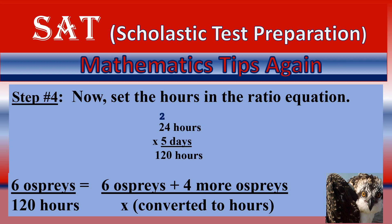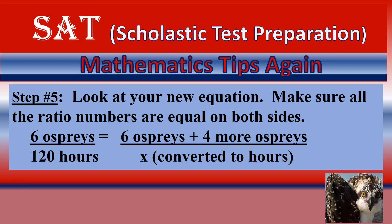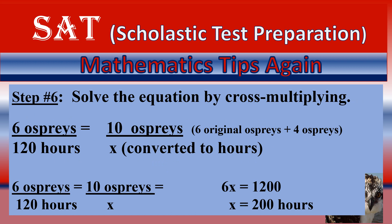Now set the conversion ratio: six ospreys over 120 hours equals six ospreys plus four more ospreys over x. You can use x, y, z, b — whichever variable you want. Six ospreys plus four more ospreys gives you 10. Make sure all these ratios are part of the equation: six ospreys equals 10 ospreys — make sure you don't change that around. 120 hours equals x hours — that's the number of hours you need to find out.